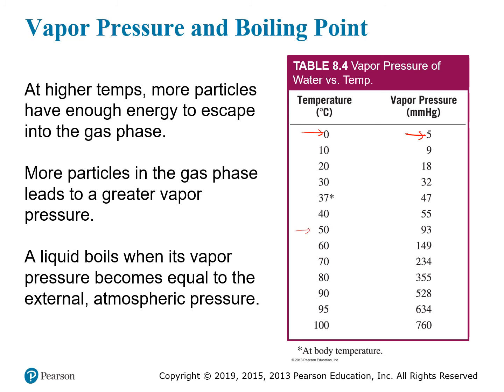At 100 degrees Celsius, the vapor pressure of water reaches 760 millimeters of mercury, which equals one atmosphere. This is not a coincidence — it defines the boiling point of water. Water boils at 100°C because at that temperature, the vapor pressure is sufficient to overcome atmospheric pressure. This is true of any liquid: any liquid boils when its vapor pressure equals the ambient atmospheric pressure.